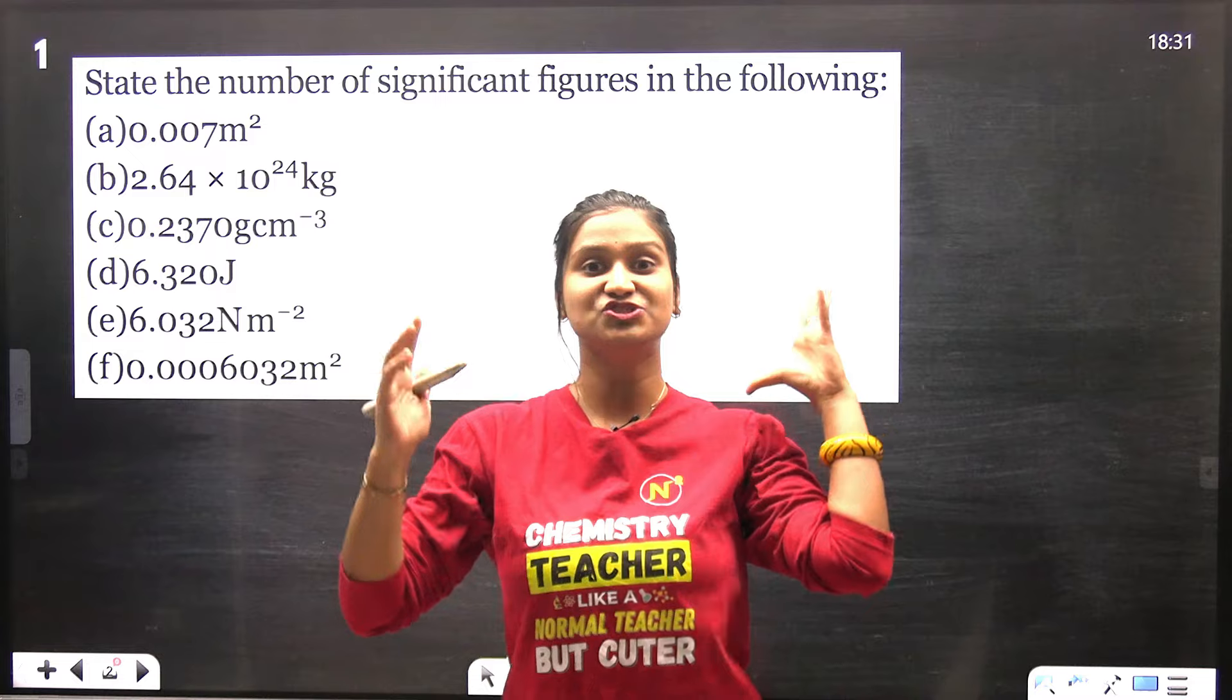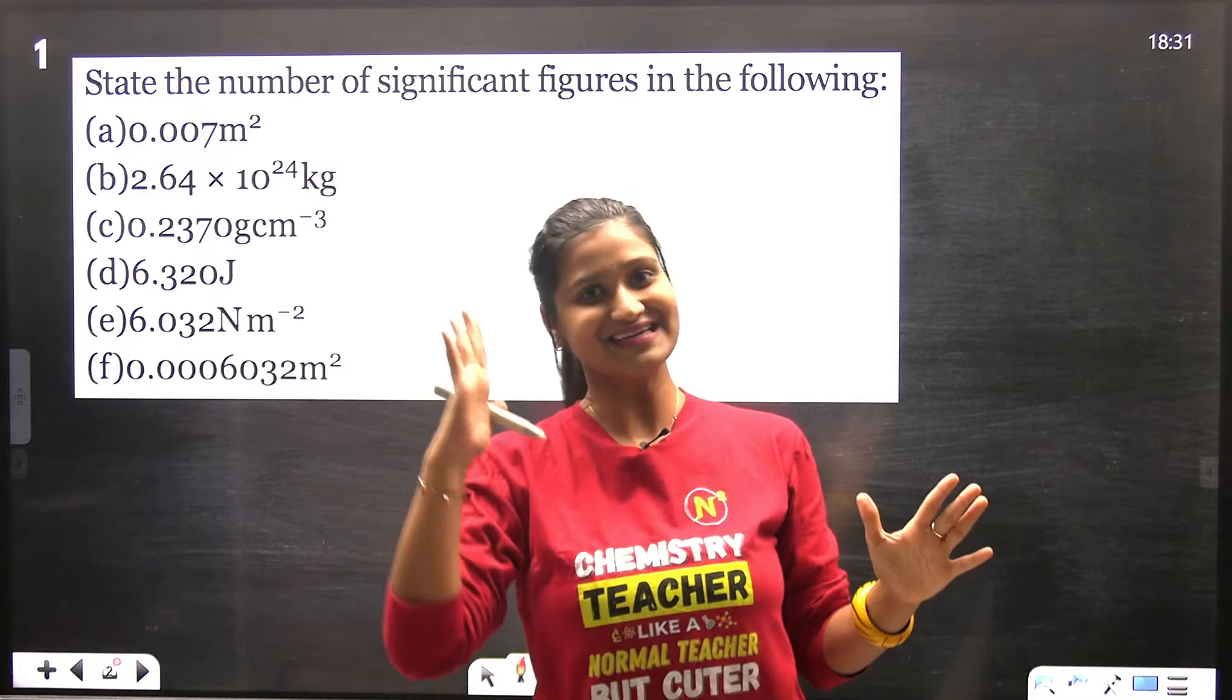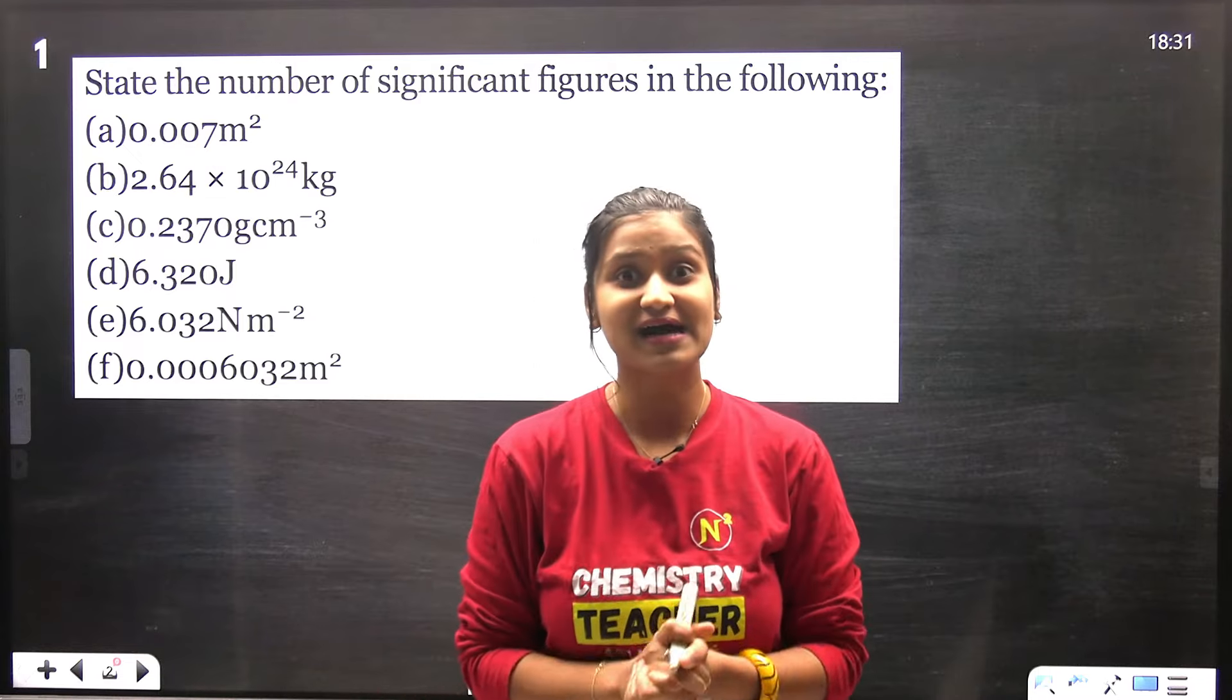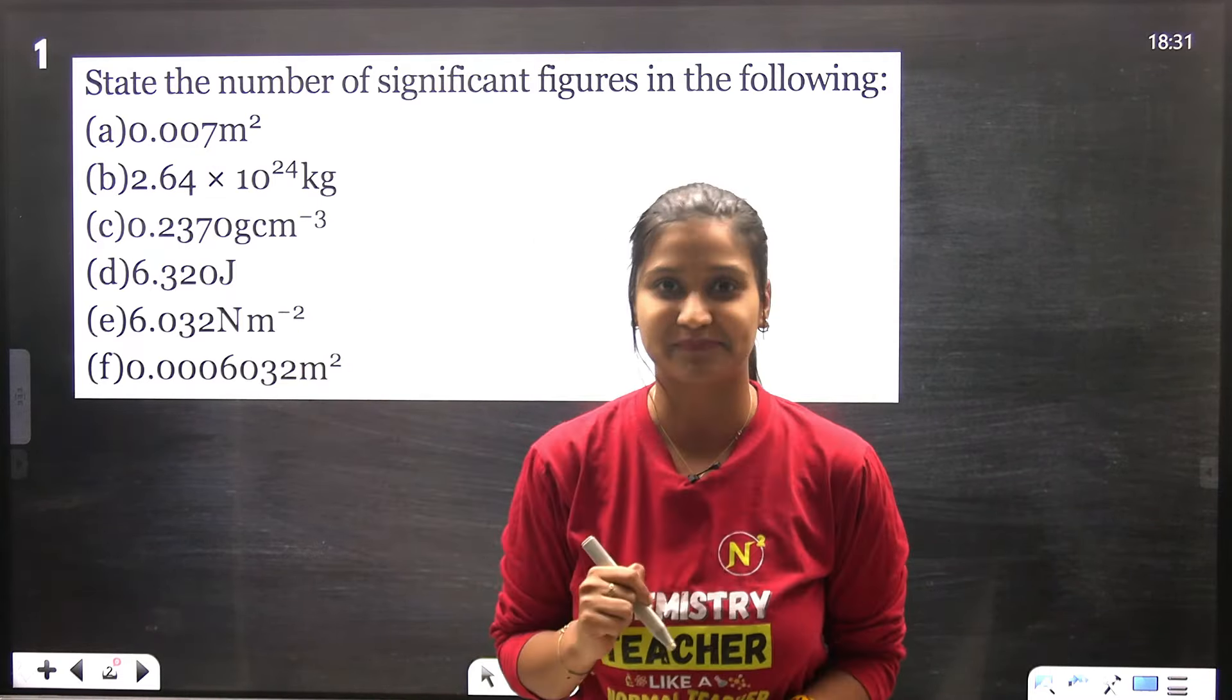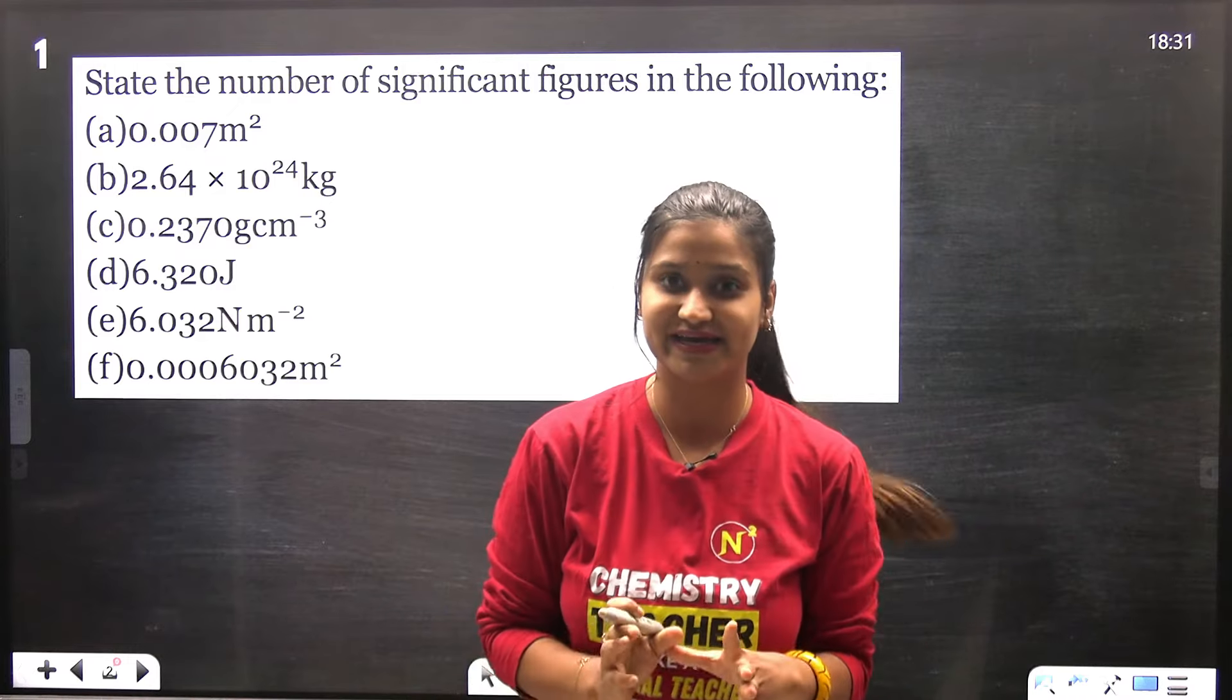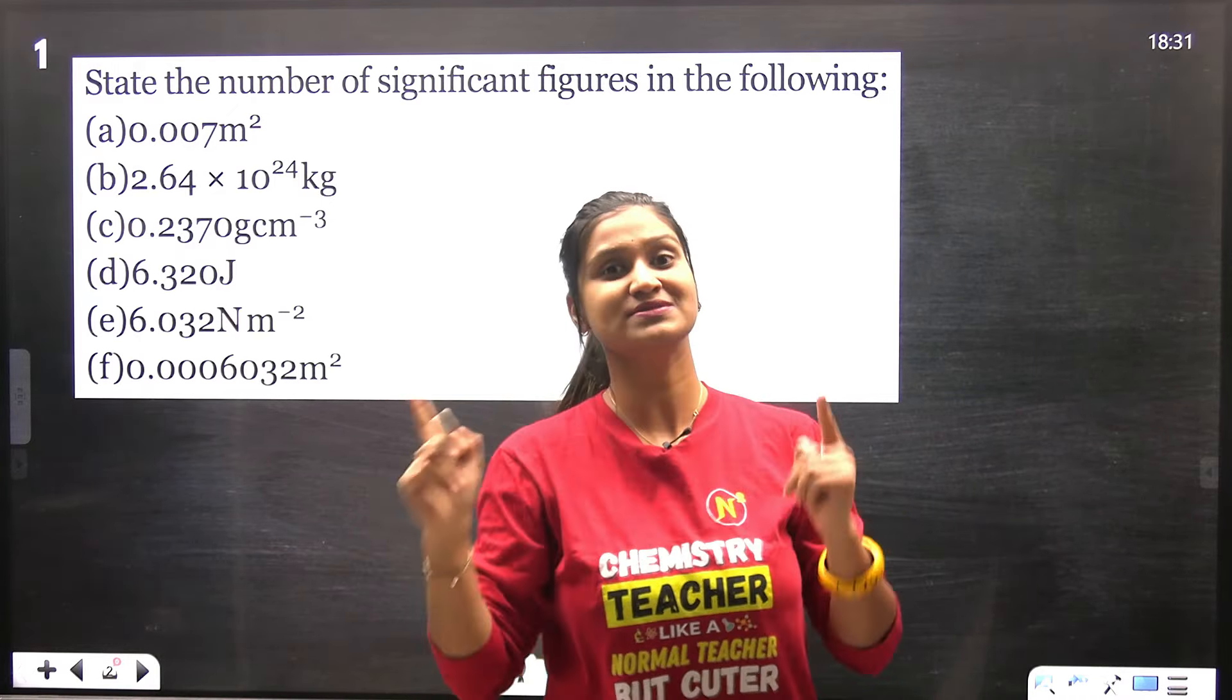Rule number 1: Whatever non-zero digits - 1, 2, 3, 4, 5, 6, 7, 8, 9 - are significant. Then comes the rule about zeros.